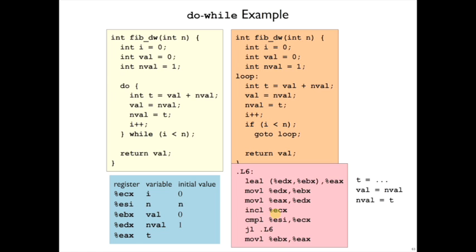Then incrementing ECX, which is i, and then the comparison of i to n, which is in ESI. In the case that i is less than n, that's when we want to jump to L6, so that's a JL instruction.